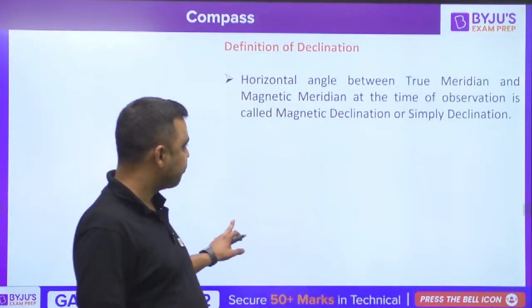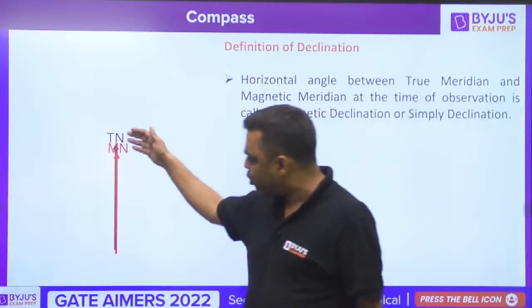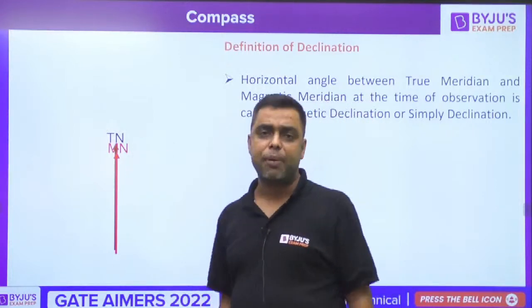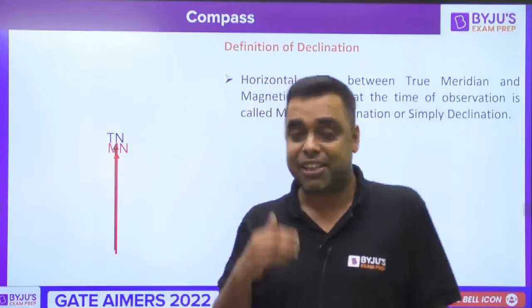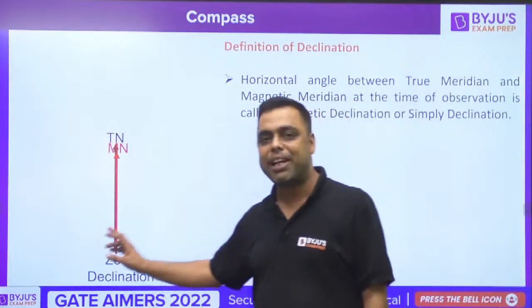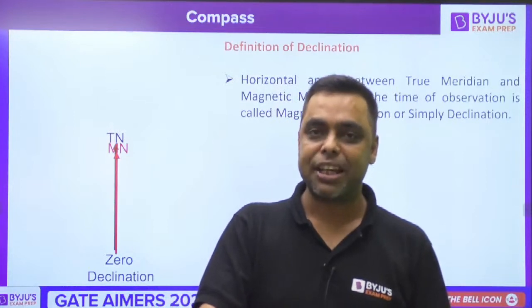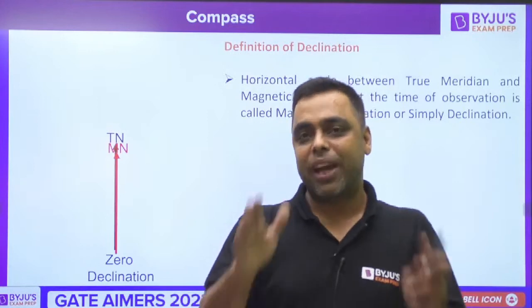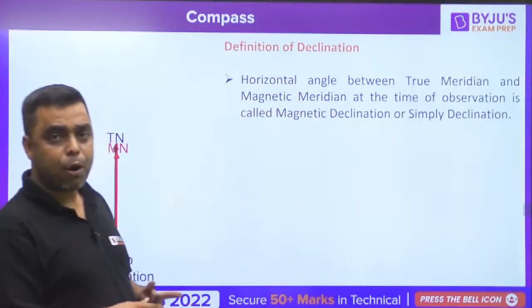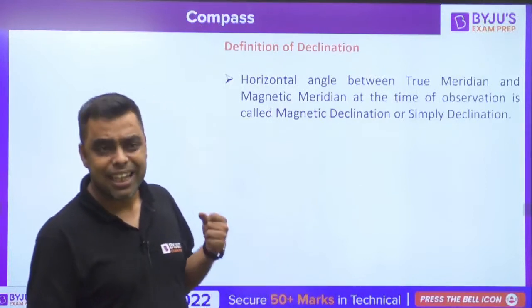Let's look at different cases. In one case, the black arrow is the true meridian and the red arrow is the magnetic meridian — they are coinciding with each other. That is a coincidence, and at this place the declination is zero. When they do not coincide, that phenomenon is called declination.